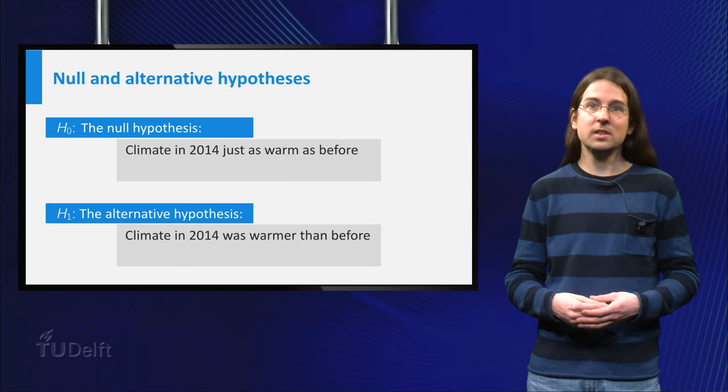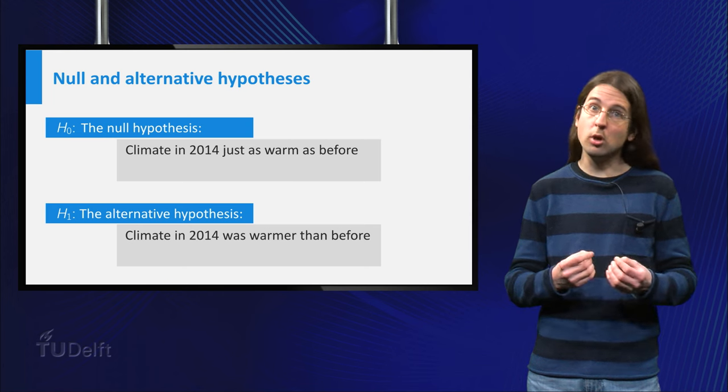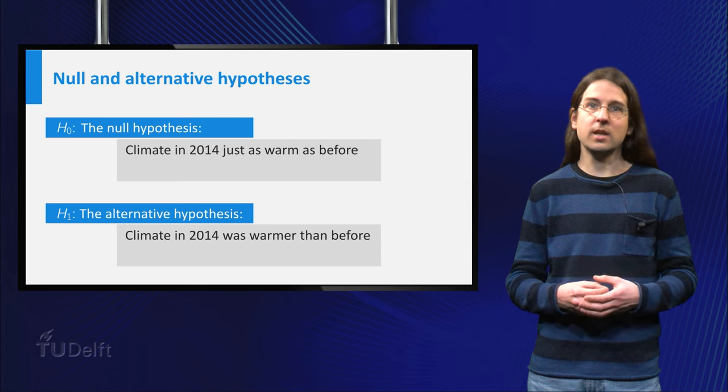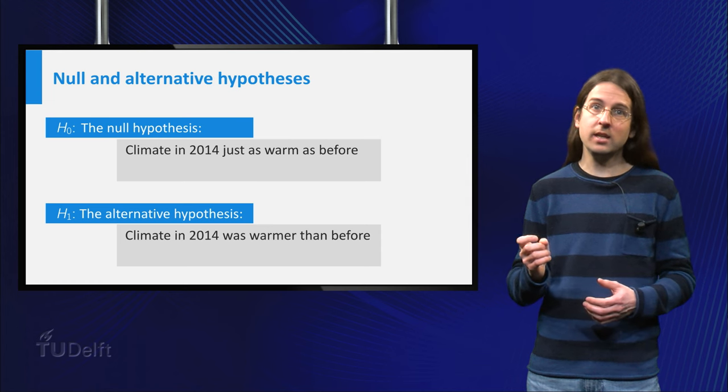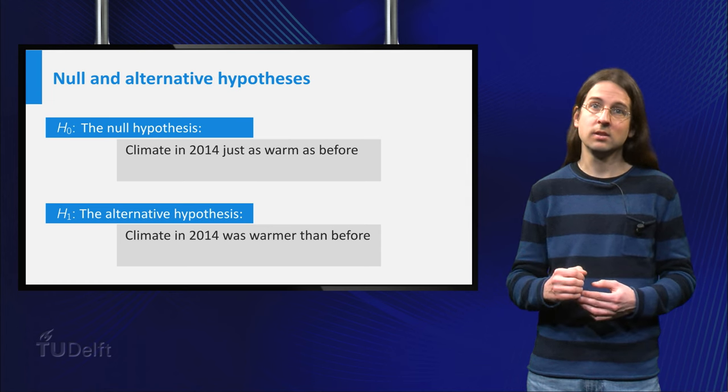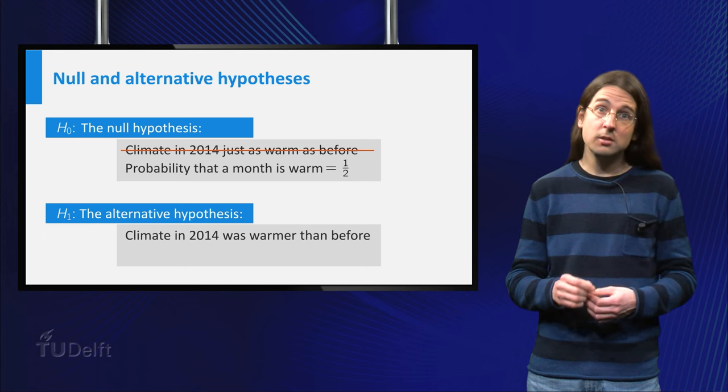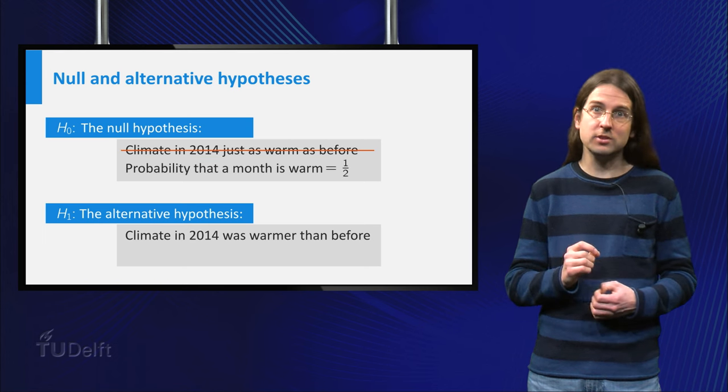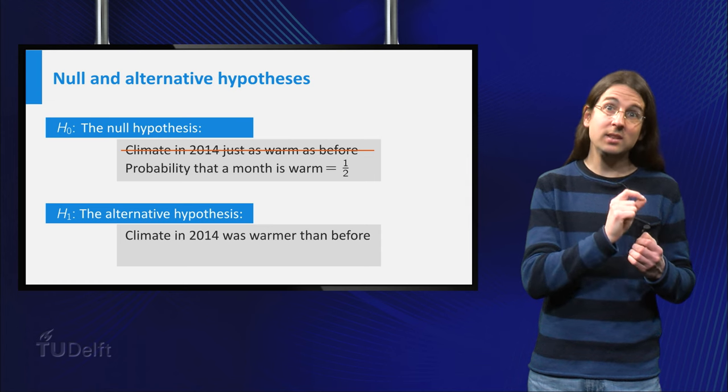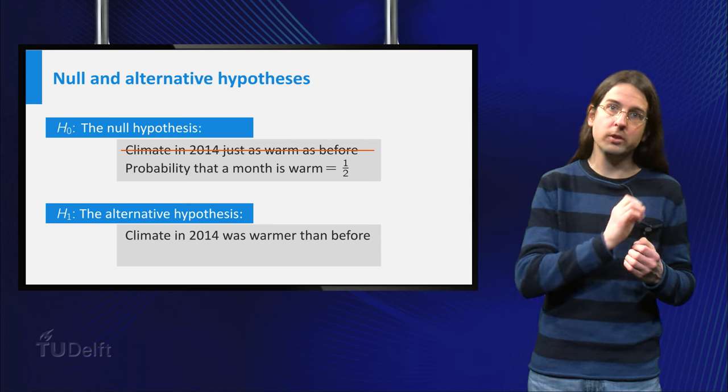Let's say a month in 2014 is warm if it is warmer than the average for that month in 1981 to 2010. In this case, we will take as null hypothesis H0 the statement that the probability that a month is warm equals one half.